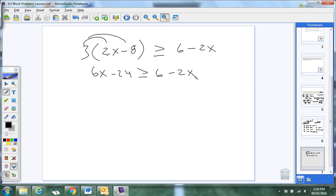And then I'm going to add the 2X, add the 2X. That's gone. I moved that one because it's the smallest one. 8X minus 24 is greater than or equal to 6. Add 24, add 24. 8X is greater than or equal to 30. Divide 8, divide 8.